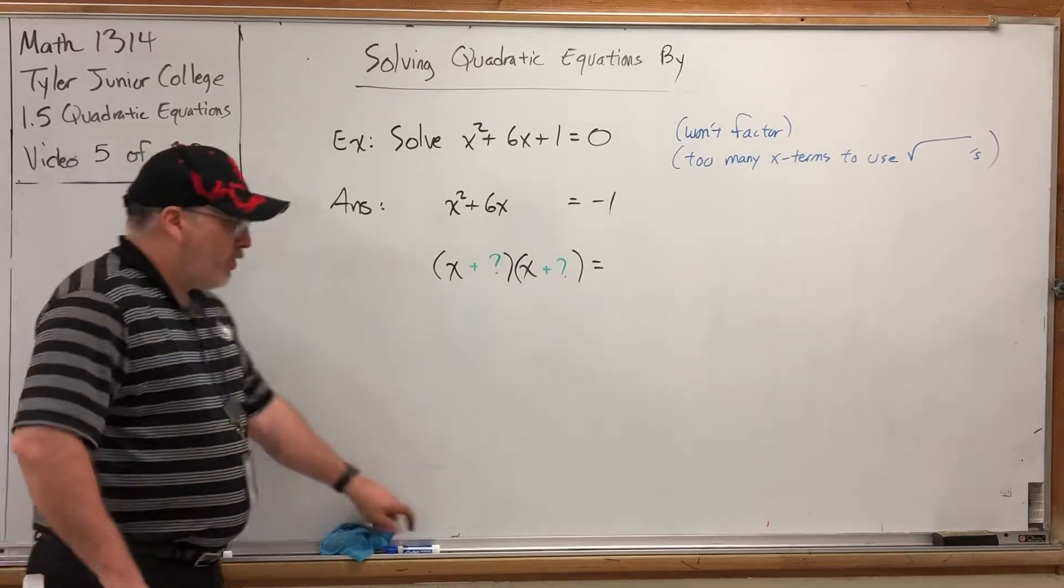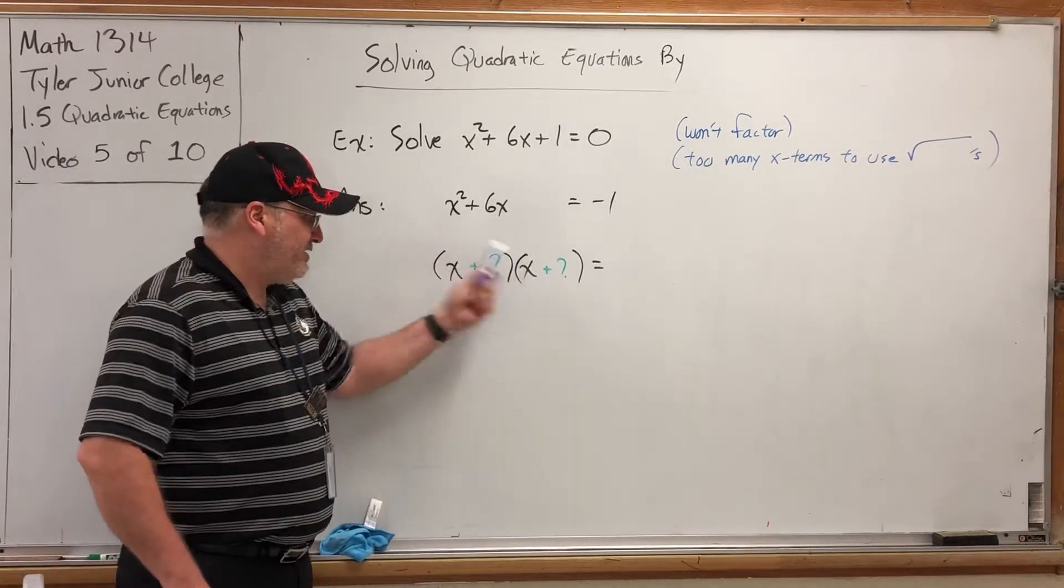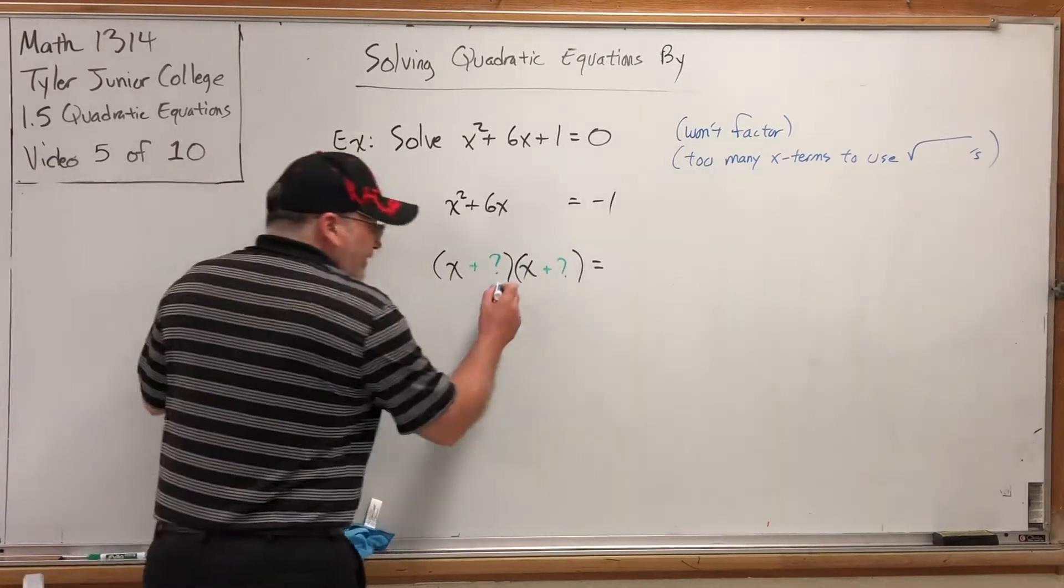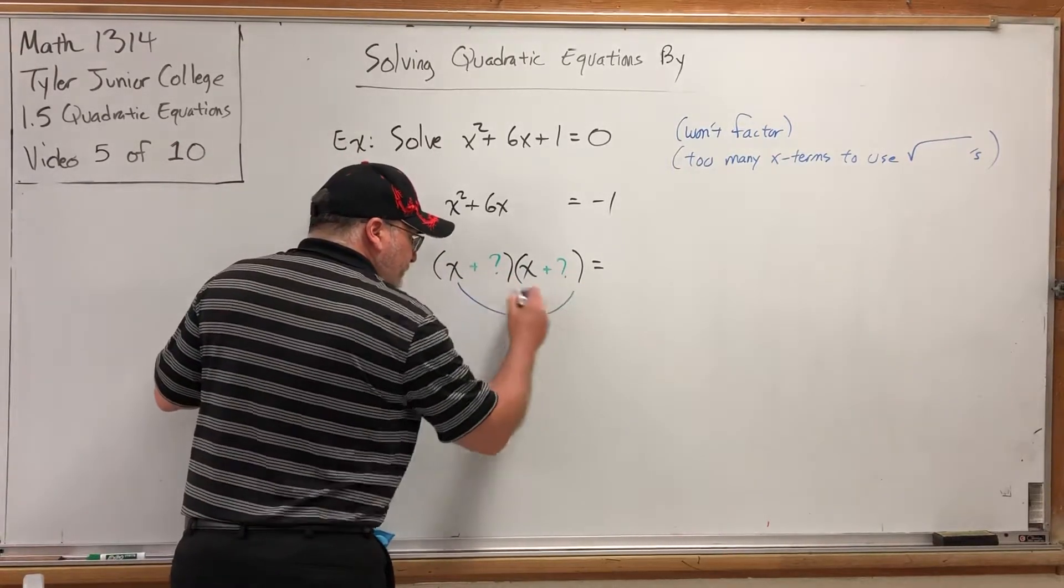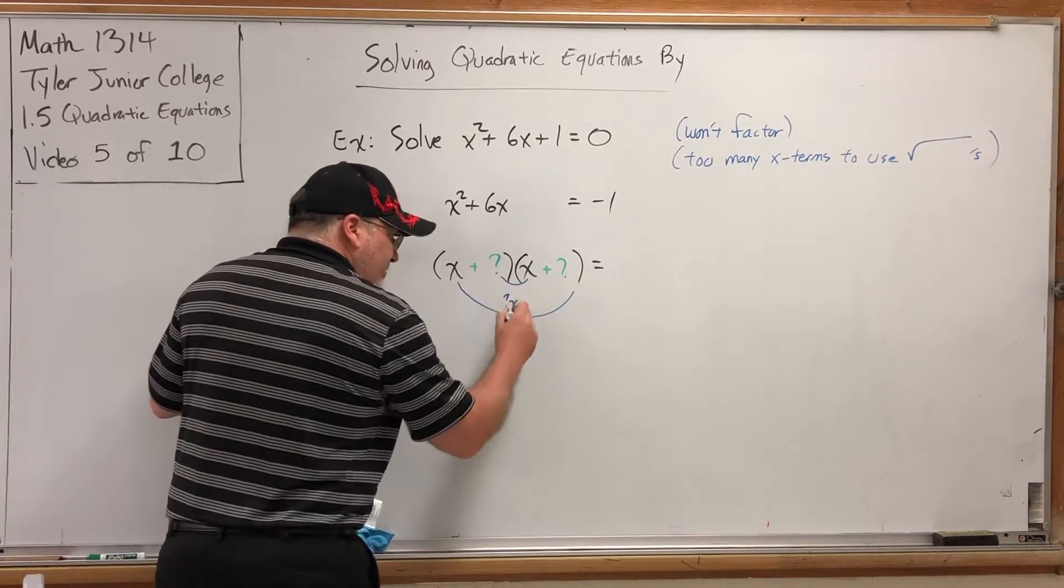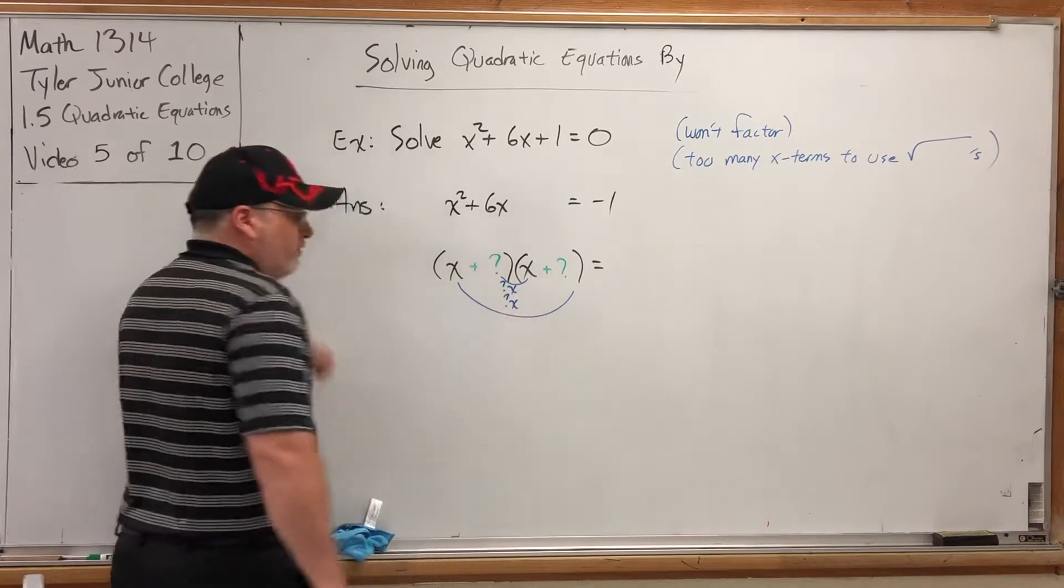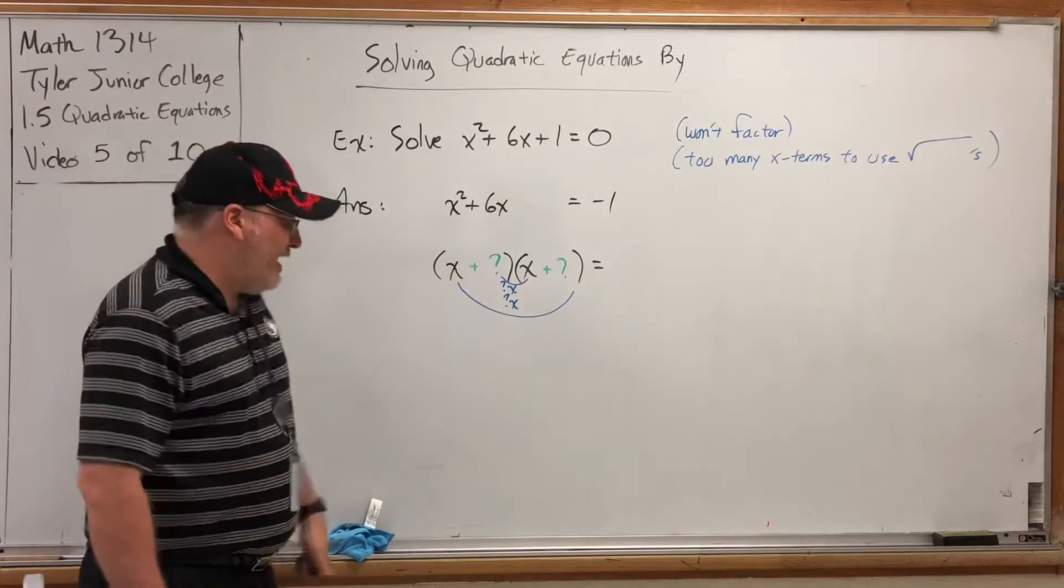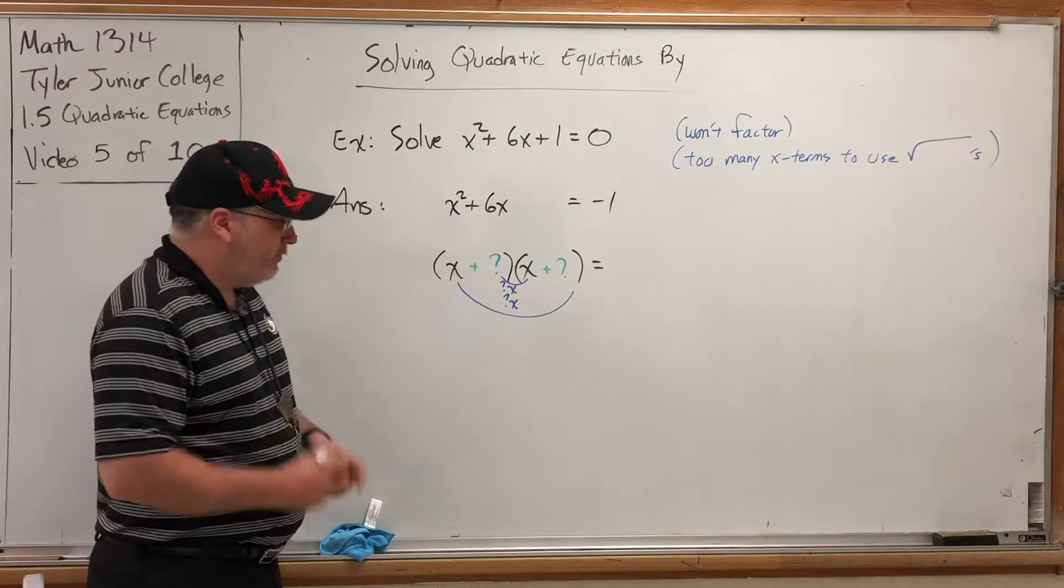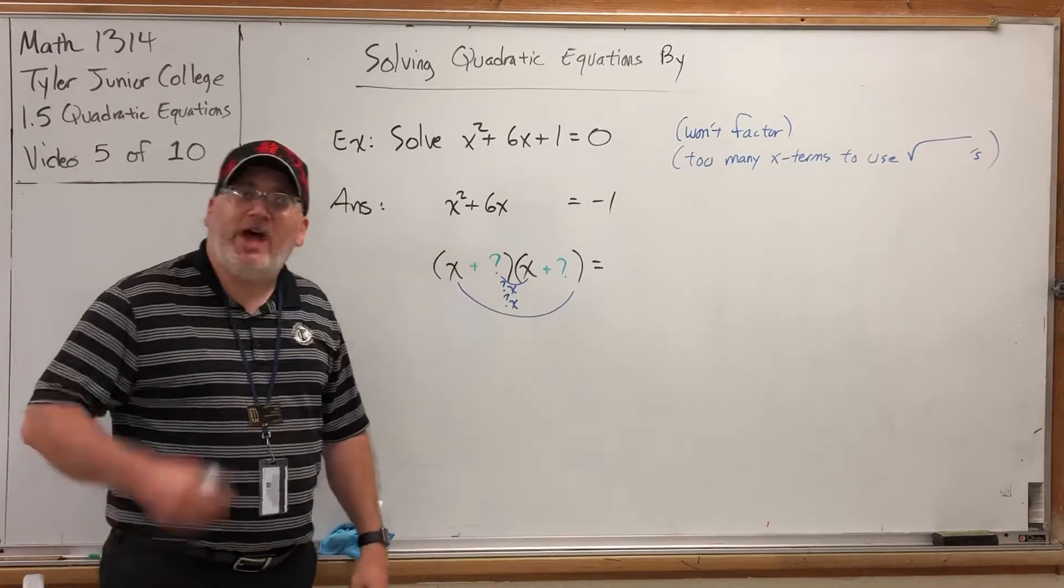As a FOIL problem, the first part of FOIL is already set. x times x is x squared. I'm not worried about that. But the outside and the inside will be some unknown number times x twice. And I know what that has to give when I combine them.